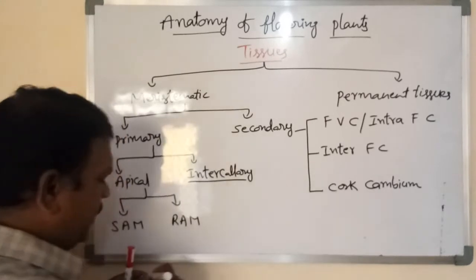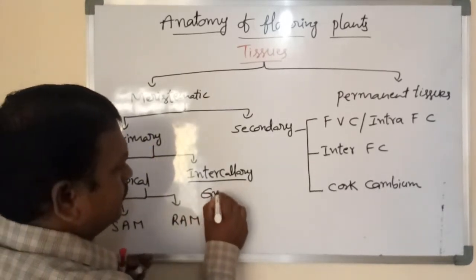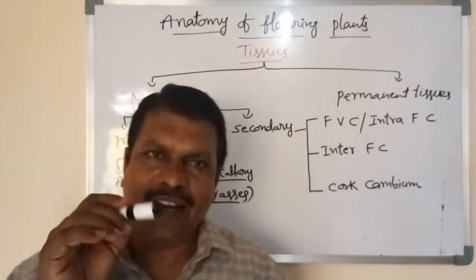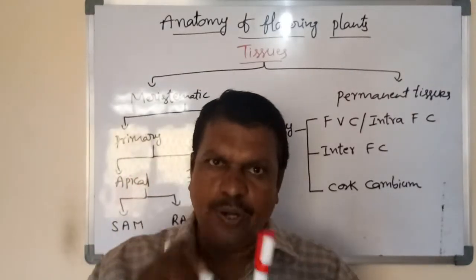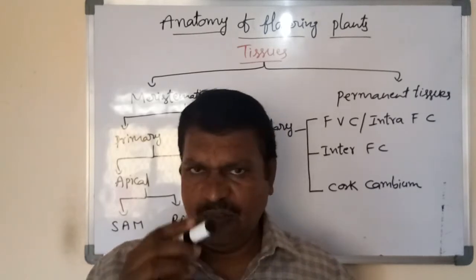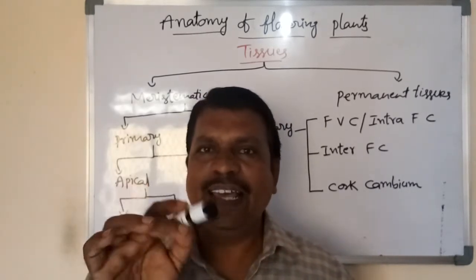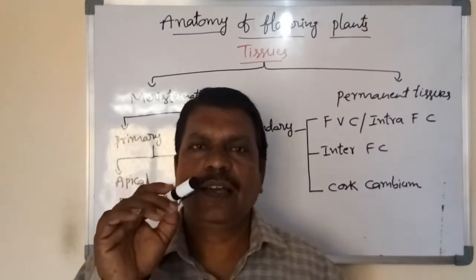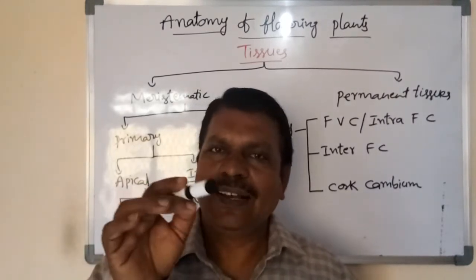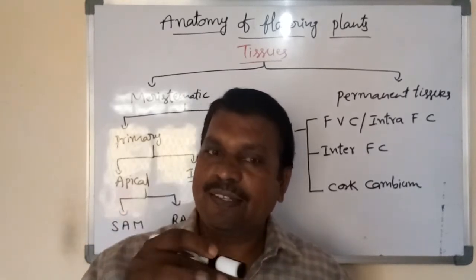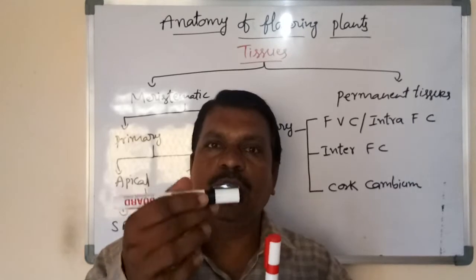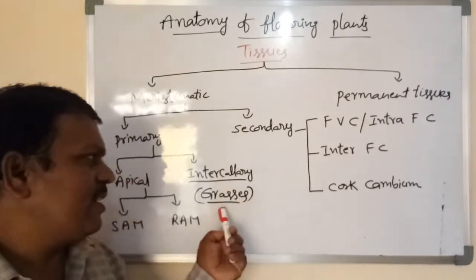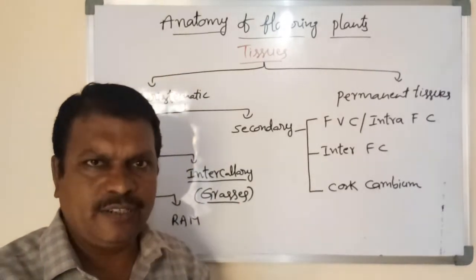Intercalary meristem is common in grasses — grass plants. Intercalary meristem is present in grass plants, particularly just below the node. Grazers — cattle like cow, sheep, goat — are herbivores. When grazers eat grass, the grass plants again develop new branches and new leaves due to the activity of intercalary meristem. That is the importance of intercalary meristem; it is quite common in grass plants.